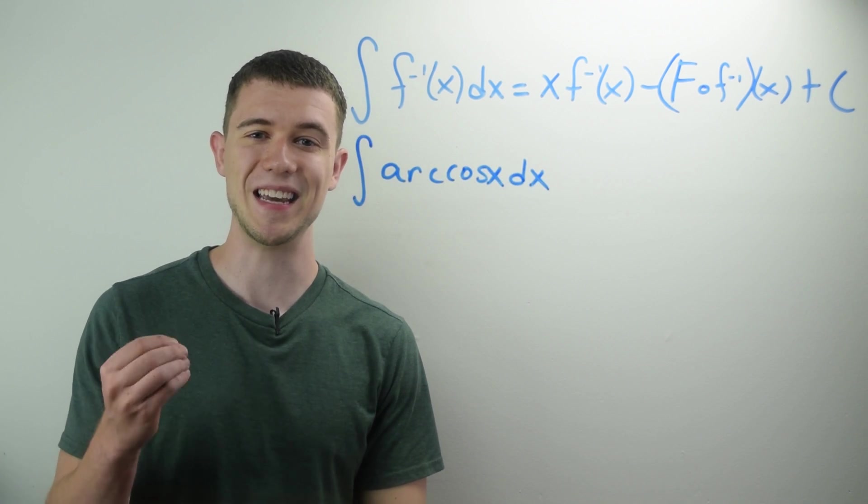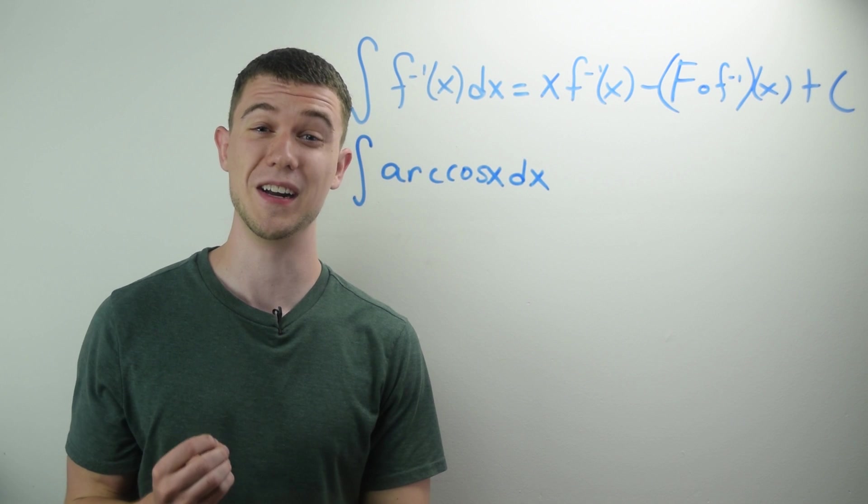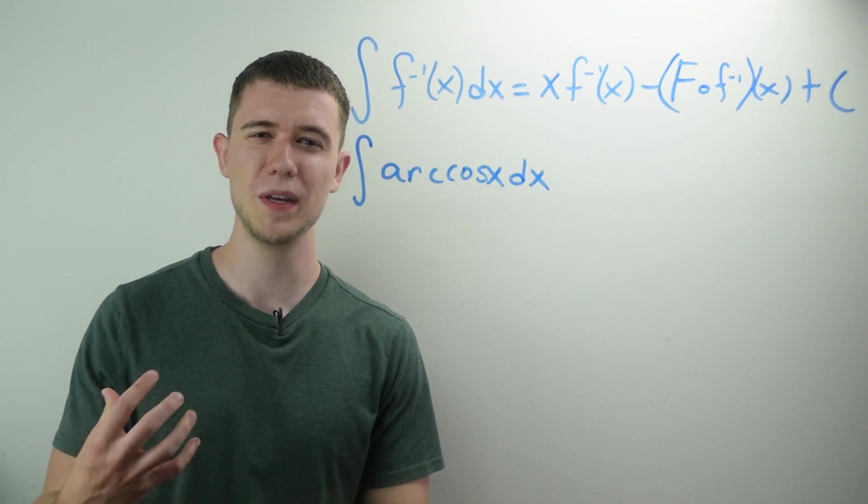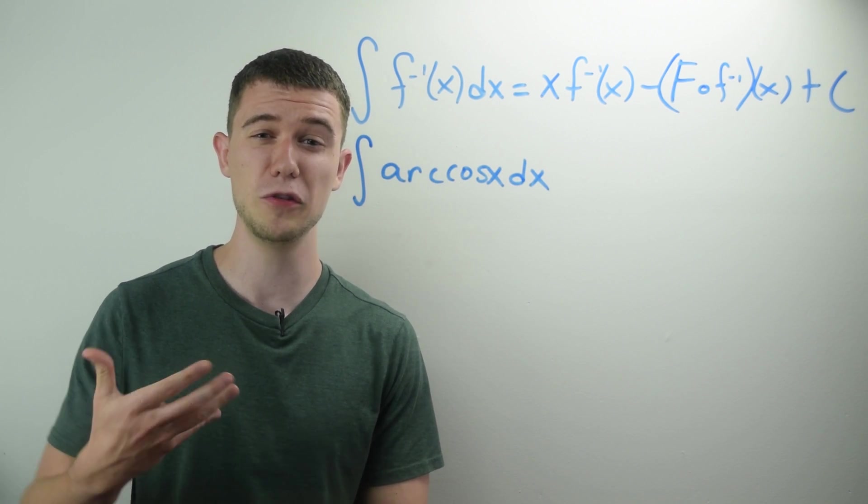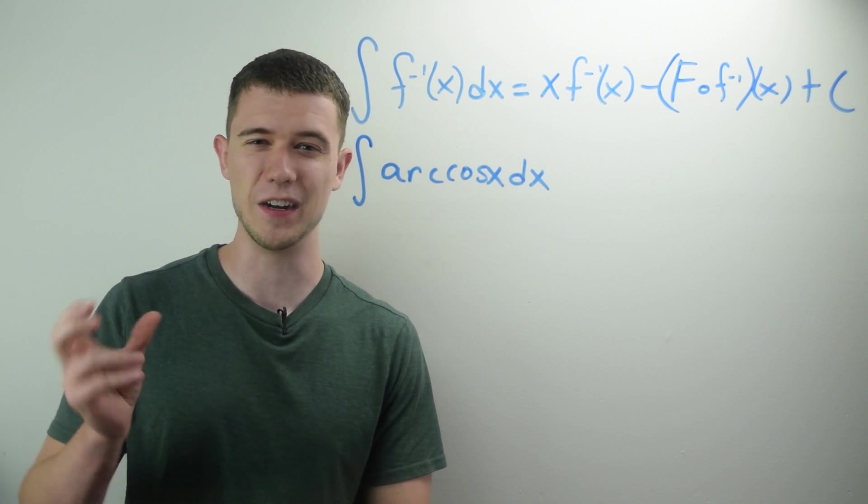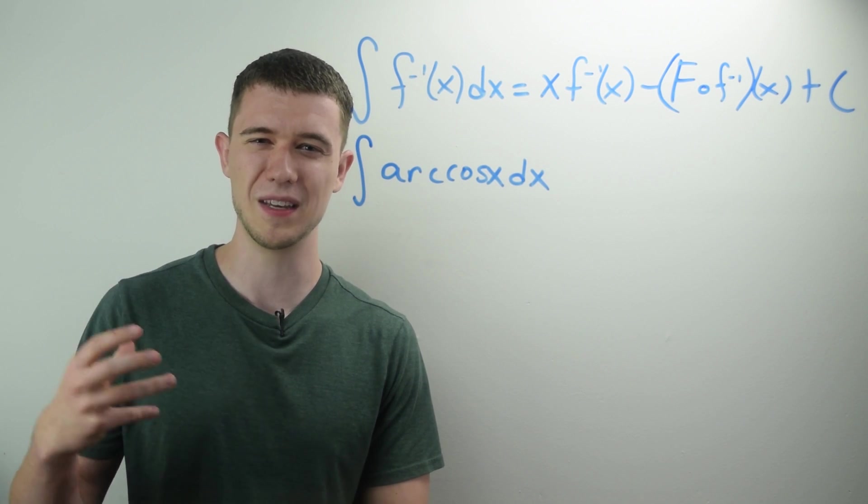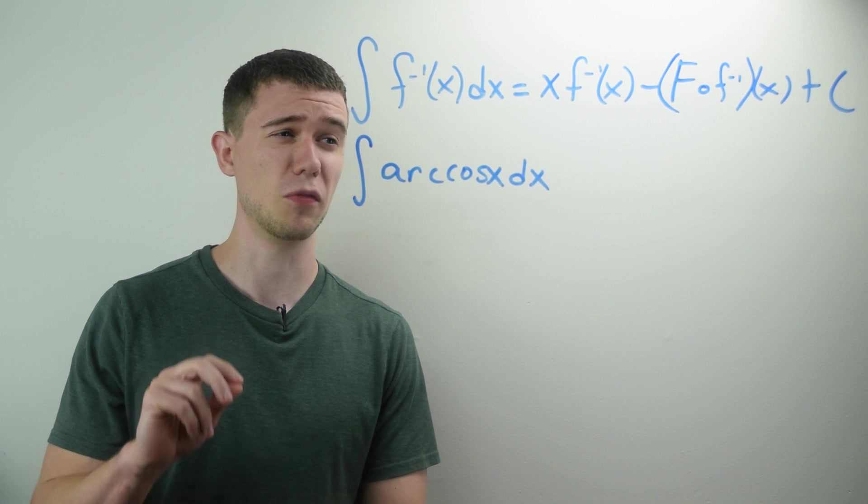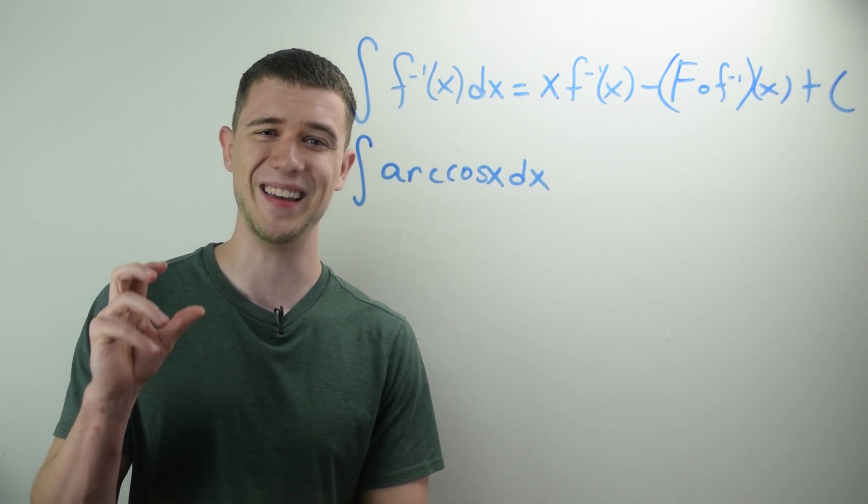Let's use this trick to take the antiderivative of arc cosine of x. Now, normally this would be kind of an annoying problem to do. You'd have to do something like integration by parts, you'd have to fool around with some things, it'd be a little bit annoying. But with our formula, we can make it very easy.